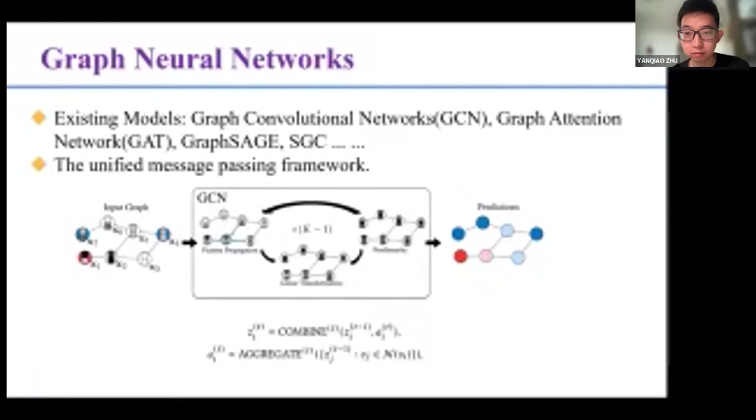For GCN, after the feature's propagation, linear transformation and non-linear operations are performed to obtain the node representation set that will be input to the next layer. The embeddings of this iteration process could be used for various tasks such as classification, link prediction, and so on.